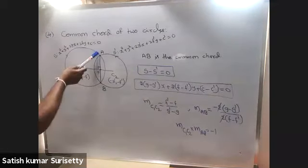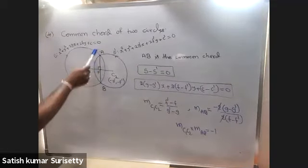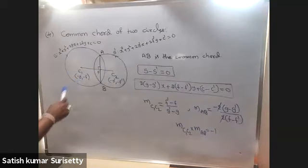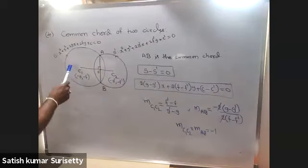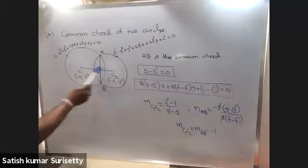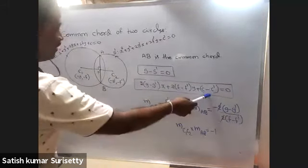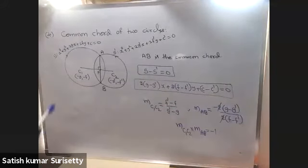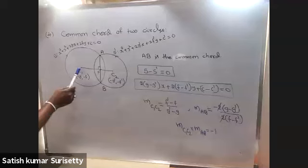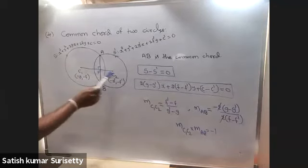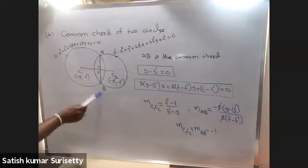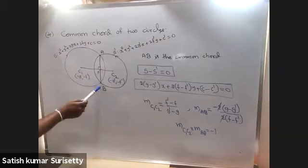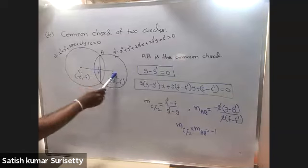Geometrically, the equation of the common chord is always perpendicular to the line segment joining the centers C1 and C2. We can prove this mathematically by calculating the slope of the line joining C1 and C2 and the slope of the common chord — their product is minus 1. Also, the line segment joining C1 and C2 bisects the common chord. That is, P is the midpoint of AB only, not necessarily the midpoint of C1C2.